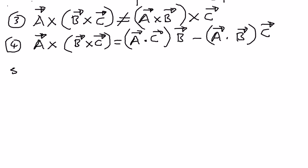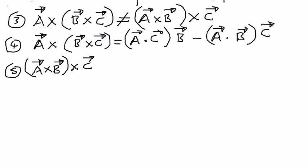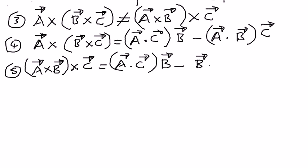The next property is: if we have vector A cross vector B, and then cross multiply that result with vector C, that is the same as saying vector A dot vector C times vector B, minus vector B dot vector C times vector A.